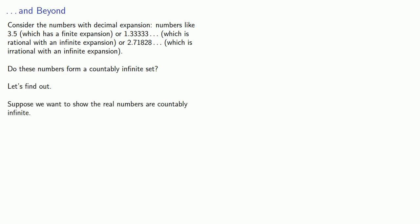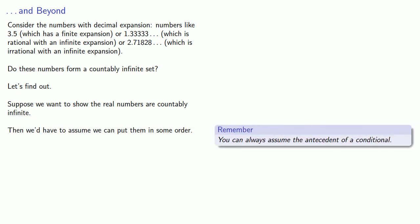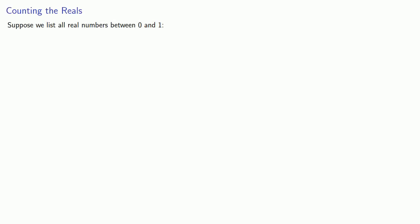Suppose we wanted to show that the real numbers are countably infinite. Then we'd have to assume we can put them in some order. Remember, you can always assume the antecedent of a conditional. So let's assume we can list the elements of the real numbers in some order. Suppose we list all real numbers between 0 and 1 — the first number, maybe it's this, the second, this, and so on.